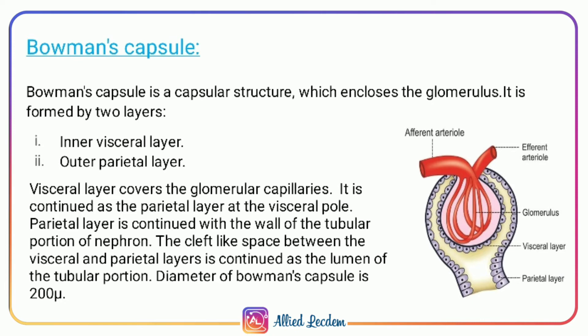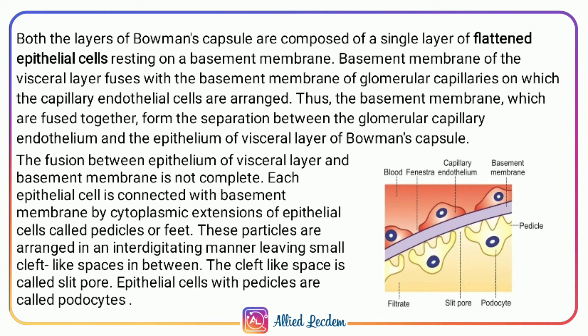The space between the visceral and parietal layer is continuous as the lumen for the tubular portion — lumen meaning the inside space of the tubular portion. The Bowman's capsule diameter is 200 micrometers. Both layers of Bowman's capsule are composed of a single layer of flattened epithelial cells resting on a basement membrane.